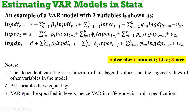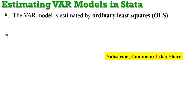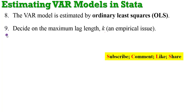Lastly, a VAR must be specified in levels. If you specify your VAR in differences, you have simply misspecified the model. All the variables here are in levels, not in first differences. A VAR model is estimated by ordinary least squares. You can always decide on the maximum lag length, though it is an empirical issue that depends on the structure of your data.